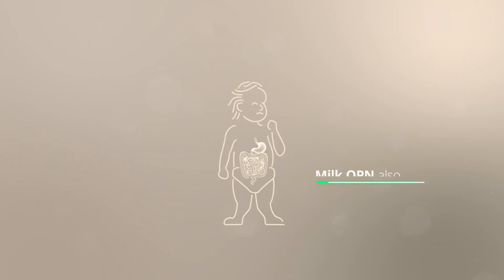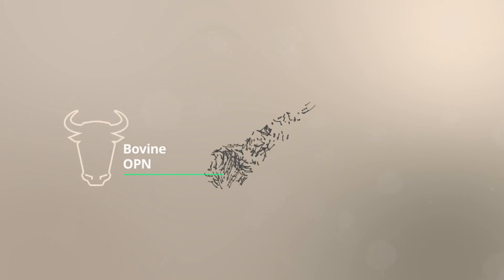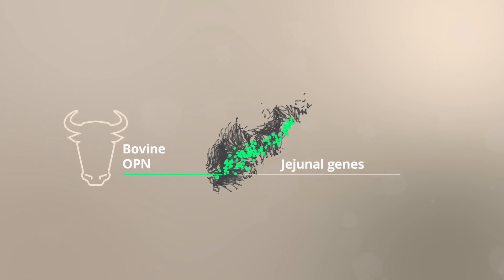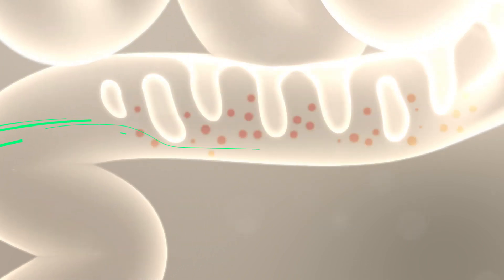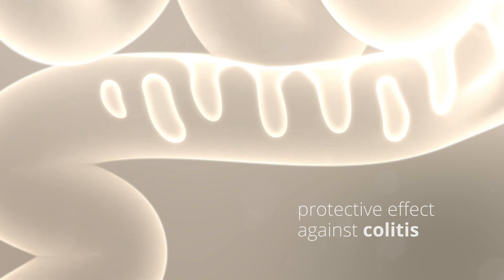Milk OPN has been shown to have an impact on the function of intestinal development in pre-clinical models. Additionally, supplementation with bovine OPN has been shown to modify the expression of jejunal genes in the small intestine, bringing them closer to the breastfed group. Furthermore, OPN can also be found in colonic mucosa of supplemented mice, where it has a protective effect against colitis.